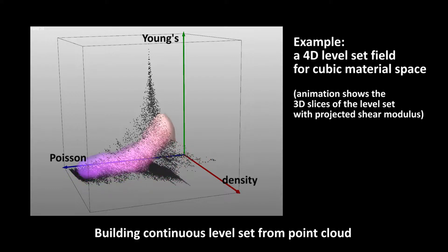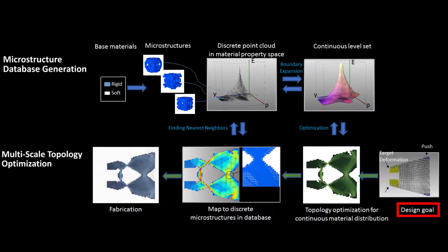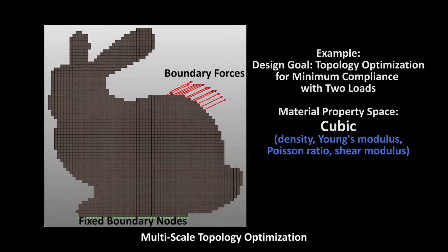For example, here we show a 4D level set for cubic material. We run our topology optimization algorithm to achieve certain design goals such as minimum compliance or target deformation.